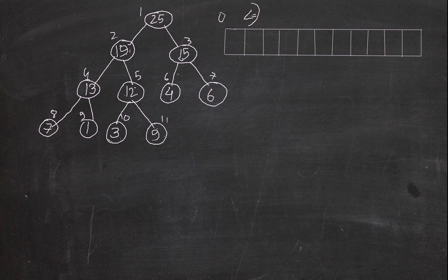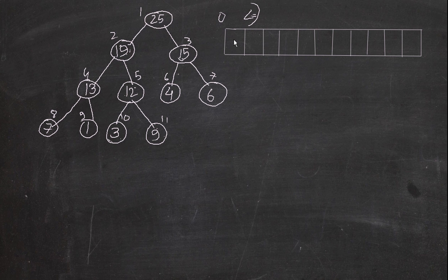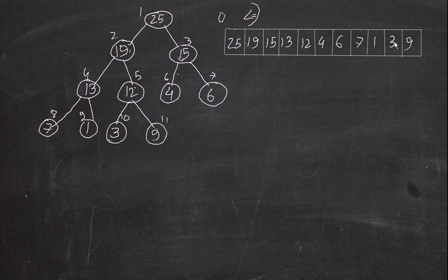The heap sort algorithm works as follows: first, build the max heap, which we just did. Then, from i equals length of A down to 2 — that is from the last element down to the second — exchange A[1] and A[i], decrease the heap size, and then max-heapify again with the existing heap size. Let's put all the elements in the array: 25, 19, 15, 13, 12, 4, 6, 7, 1, 3, 9.